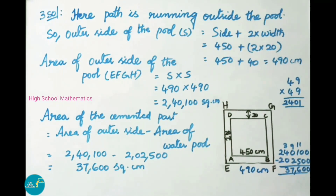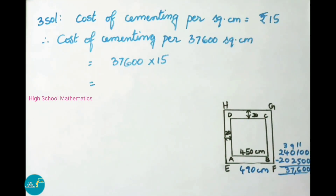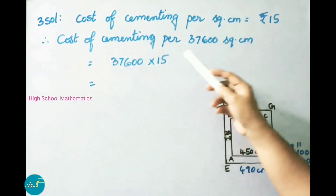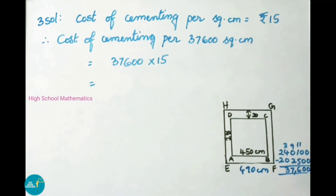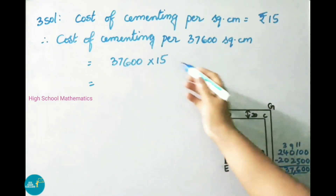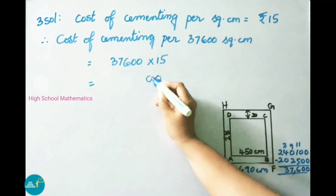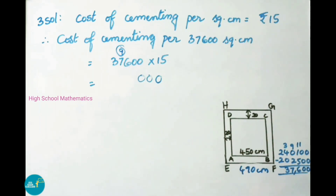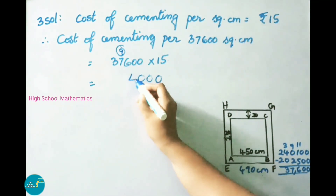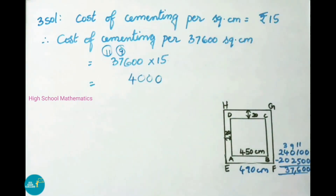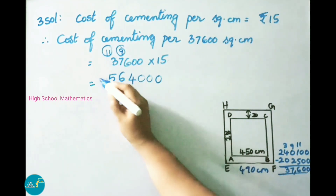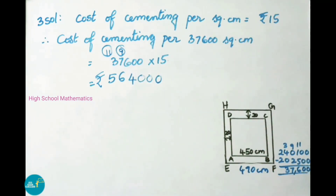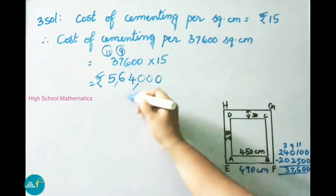Cost of cementing per square centimeter is given as 15 rupees. Therefore cost of cementing for 37,600 square centimeters is 37,600 into 15. Working through the multiplication: 15 sevens are 105 plus carry 9 gives 114, 15 threes are 45 plus carry 11 gives 56. Therefore the cost of cementing for 37,600 square centimeter is 5,64,000 rupees.